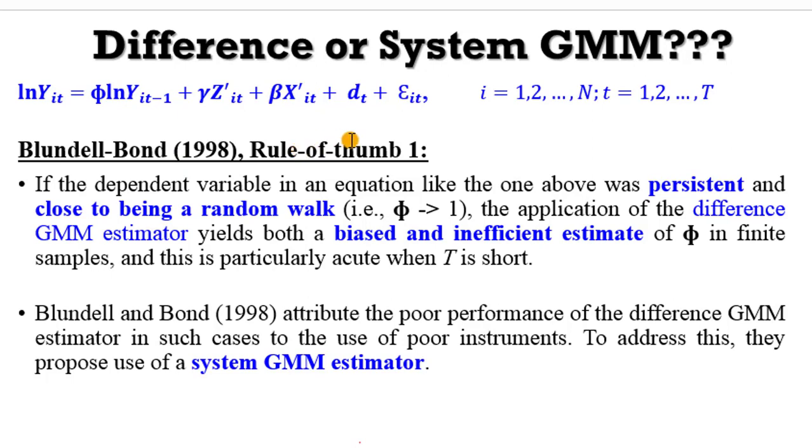So how do we decide between using either the Difference or the System GMM? There are two rules of thumb. The first rule of thumb is from Blondel and Bond 1998, and this is what they said: if the dependent variable in an equation like this was persistent and close to being a random walk, that is the parameter of the lag dependent variable is tilting towards one, the application of the Difference GMM estimator will yield both a biased and inefficient estimate of the parameter in finite samples, and this is particularly severe when the time span is short.